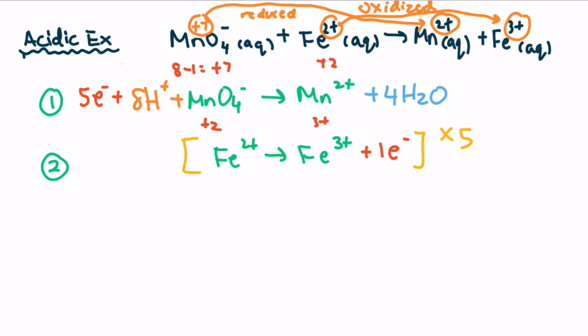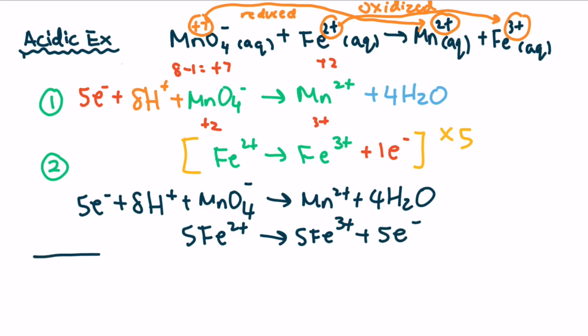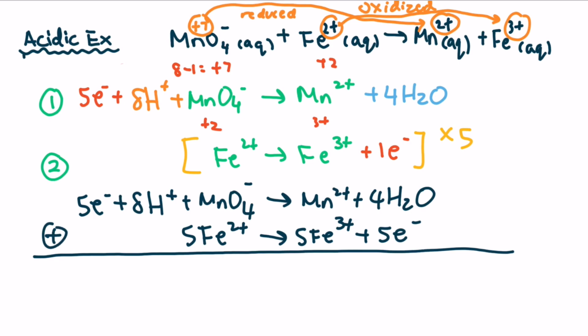We're going to multiply each half-reaction by a factor so all the electrons are equal. We have five electrons on the top and one electron on the bottom. We're going to multiply the bottom equation by five so that we have five electrons on both sides. This way, when you add together equation one and two, you can immediately cancel out the five electrons. So this is why we multiply by a factor — so that when we add them, the electrons automatically disappear.